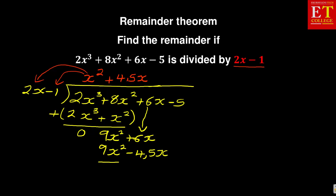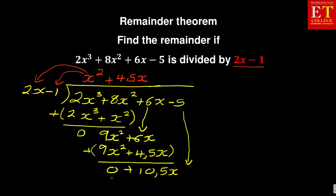Then you're going to roll off again and subtract, repeating the same step. 9x squared minus 9x squared gives 0. And 6x minus minus 4.5x — the negative and negative make it positive — so it's 6x plus 4.5x, which gives 10.5x. Then you bring down again the negative 5, so you have minus 5.